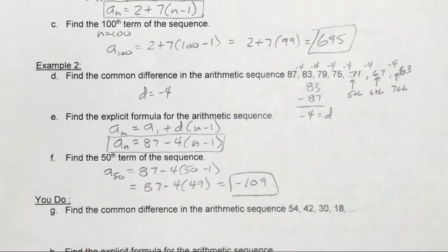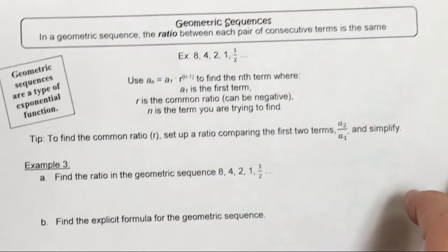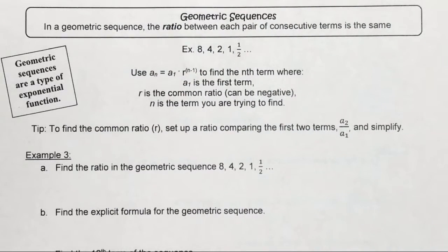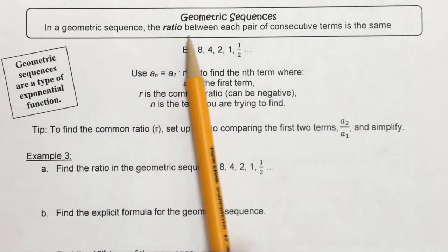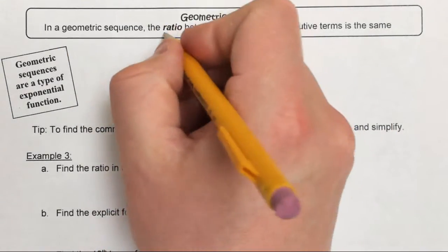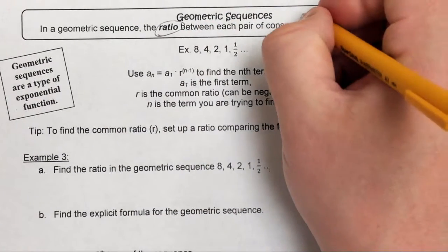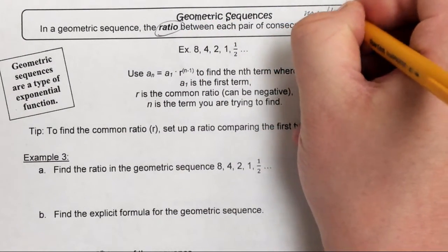Now moving on to geometric sequences. A geometric sequence is not quite the same as arithmetic. In a geometric sequence, the ratio between each pair of consecutive terms is the same. When we say ratio, you need to be thinking of multiplying.